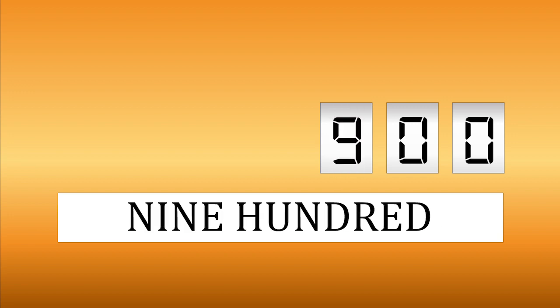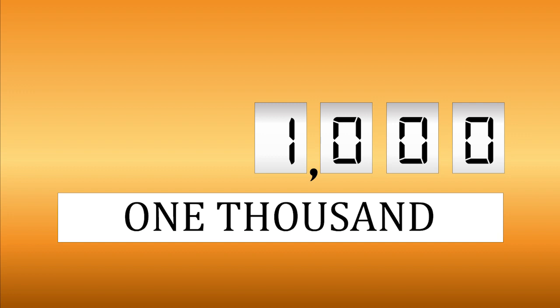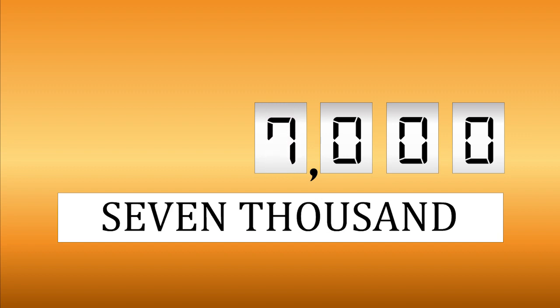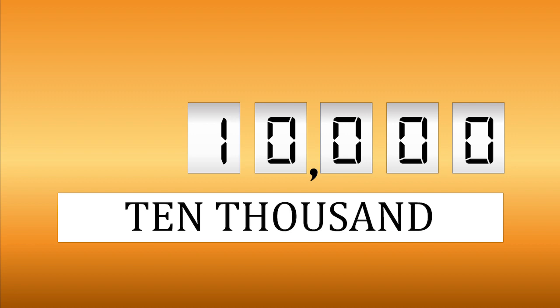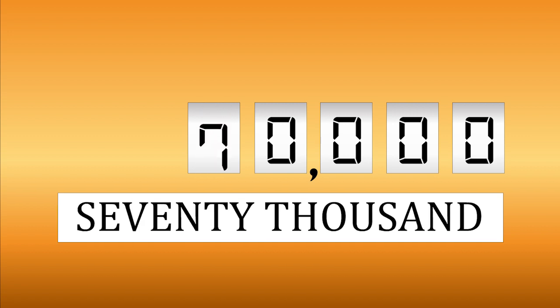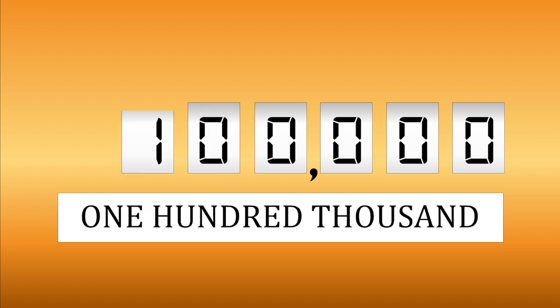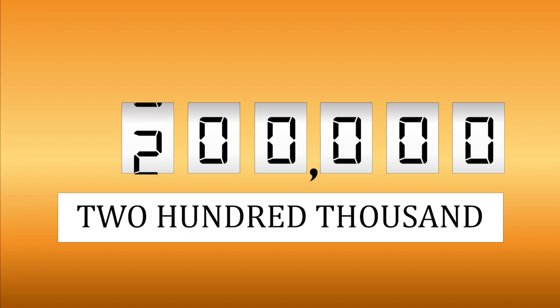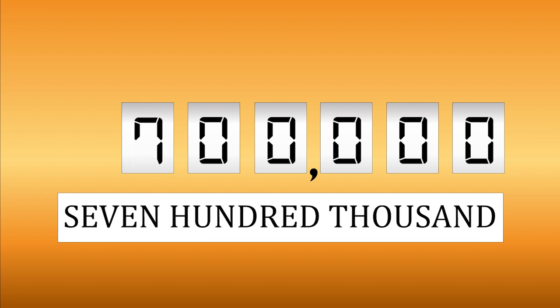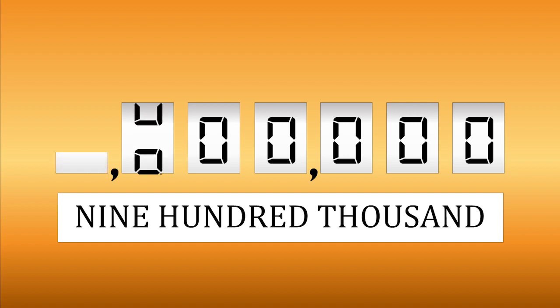Counting by hundreds: 100, 200, 300, 400, 500, 600, 700, 800, 900, 1,000. Counting by thousands: 1,000, 2,000, 3,000, 4,000, 5,000, 6,000, 7,000, 8,000, 9,000, 10,000. Counting by ten-thousands: 10,000, 20,000, 30,000, 40,000, 50,000, 60,000, 70,000, 80,000, 90,000, 100,000. Counting by hundred-thousands: 100,000, 200,000, 300,000, 400,000, 500,000, 600,000, 700,000, 800,000, 900,000, 1,000,000.